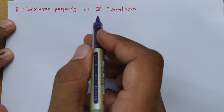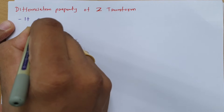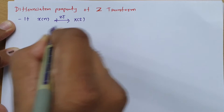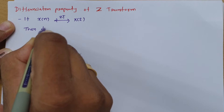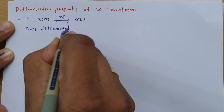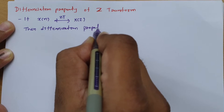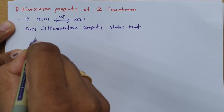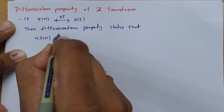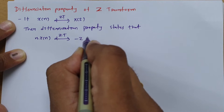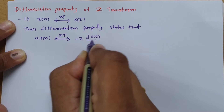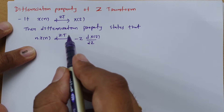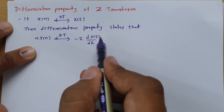So what is the differentiation property of Z-transform? If you have signal X(n) and its Z-transform is X(z), then the differentiation property states that the Z-transform of n·X(n) is minus Z times dX(z)/dz. This is the differentiation property: n·X(n) ↔ -Z·dX(z)/dz.